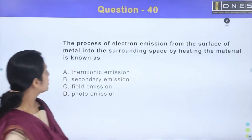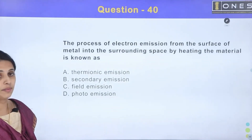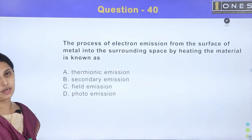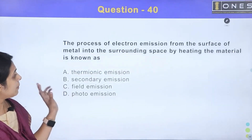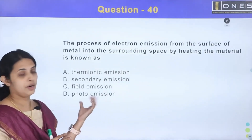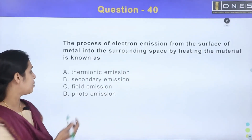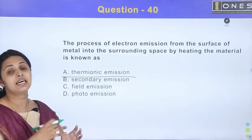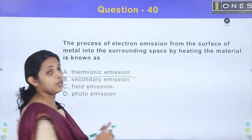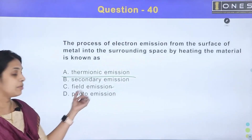Next question: The process of electron emission from the surface of a metal into surrounding space by heating the material is known as — Option A: thermionic emission, Option B: secondary emission, Option C: field emission, Option D: photo emission. Field emission occurs in the presence of an electric field.